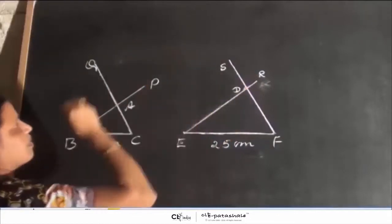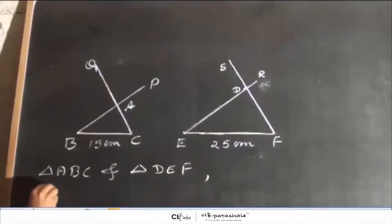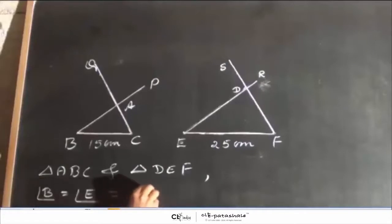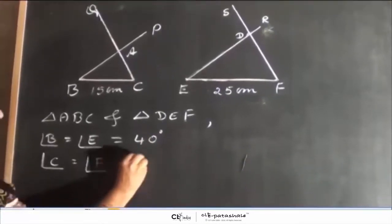Now, let us consider two triangles: triangle ABC and triangle DEF. We know that angle B is equal to angle E and both are equal to 40 degrees. Similarly, we also know that angle C and angle F is equal to 60 degrees.